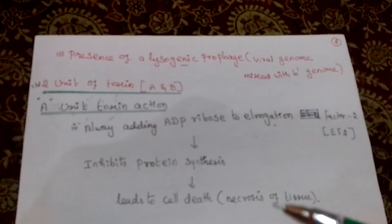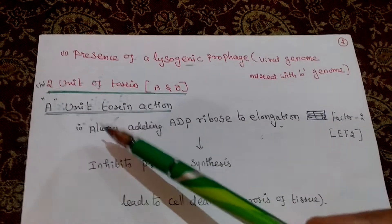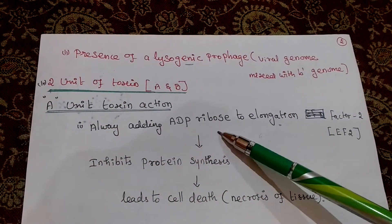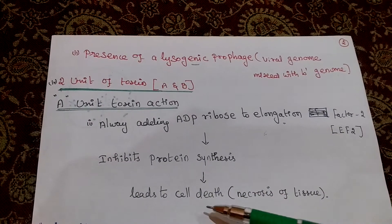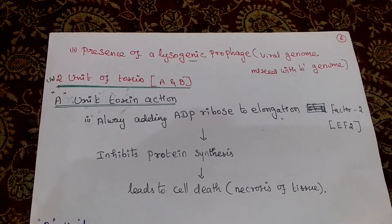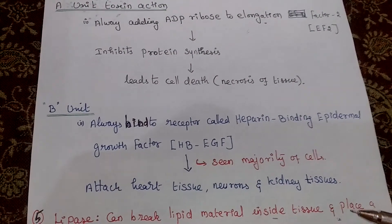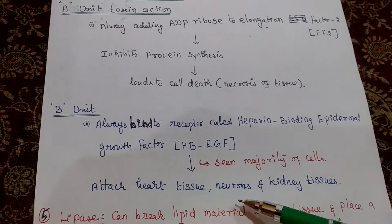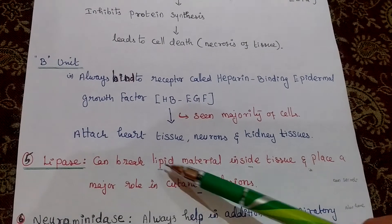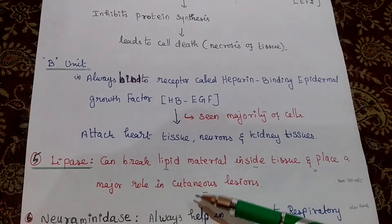The toxin has two units, A and B. The A unit binds with ADP-ribose to elongation factor 2, inhibiting protein synthesis, which leads to cell death and tissue necrosis. The B unit binds with a receptor called heparin-binding epidermal growth factor. The B unit attacks heart tissue, neurons, and kidney tissue. Additionally, the organism can secrete lipase, which breaks down lipid material inside tissue and plays a major role in cutaneous lesions.